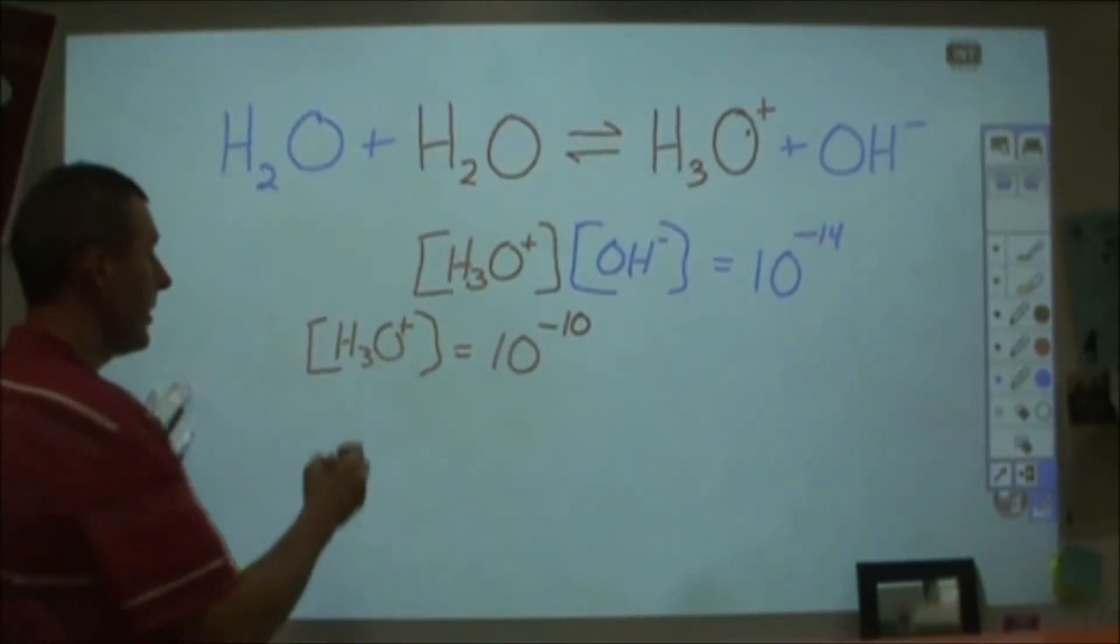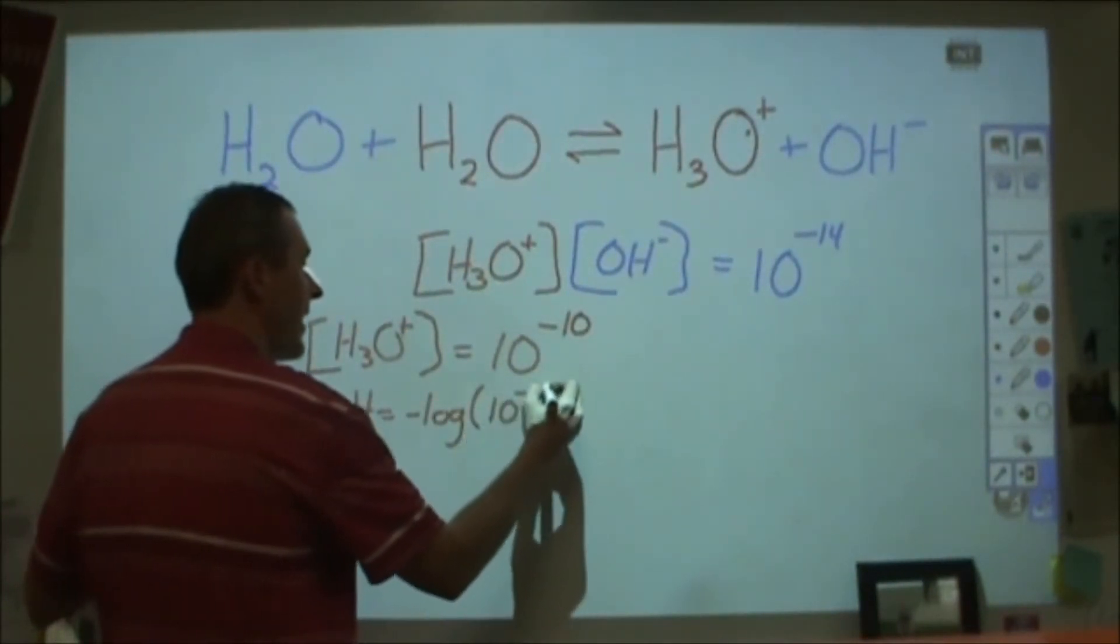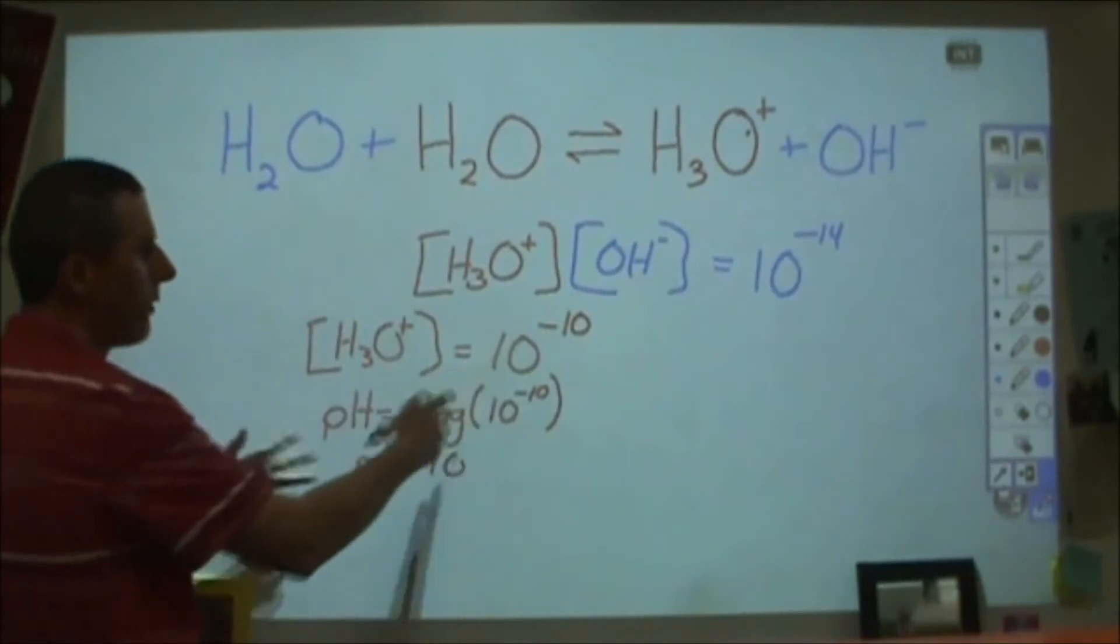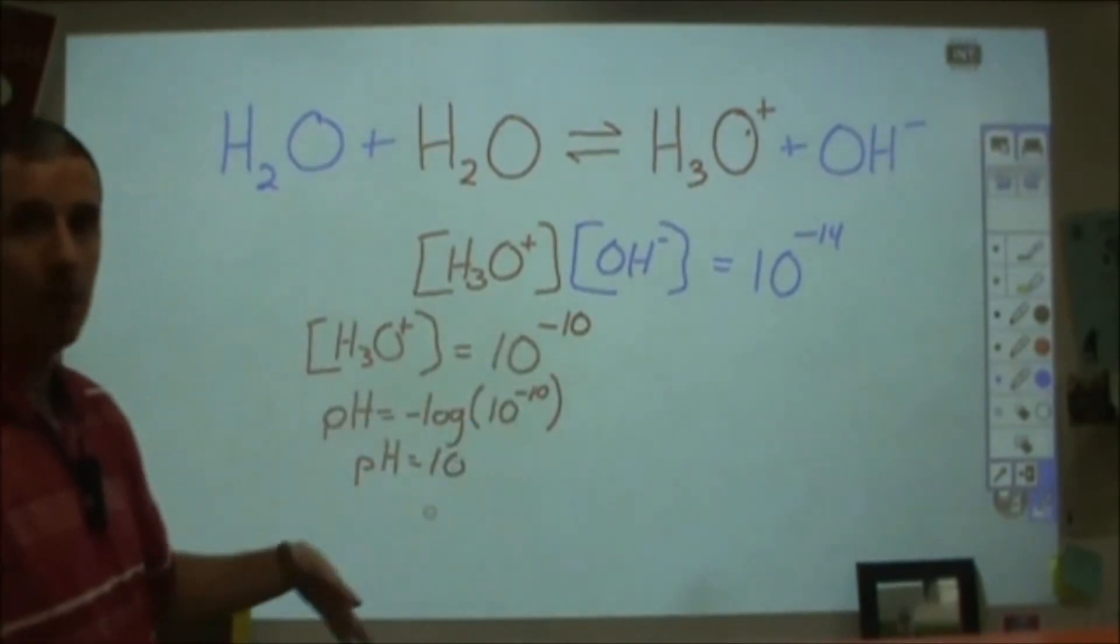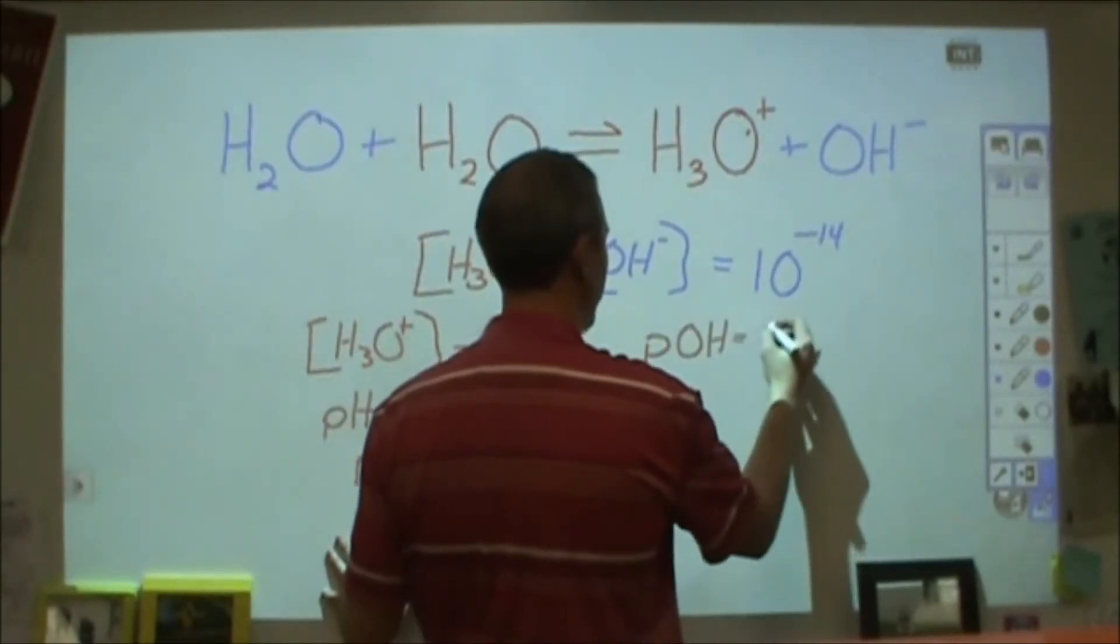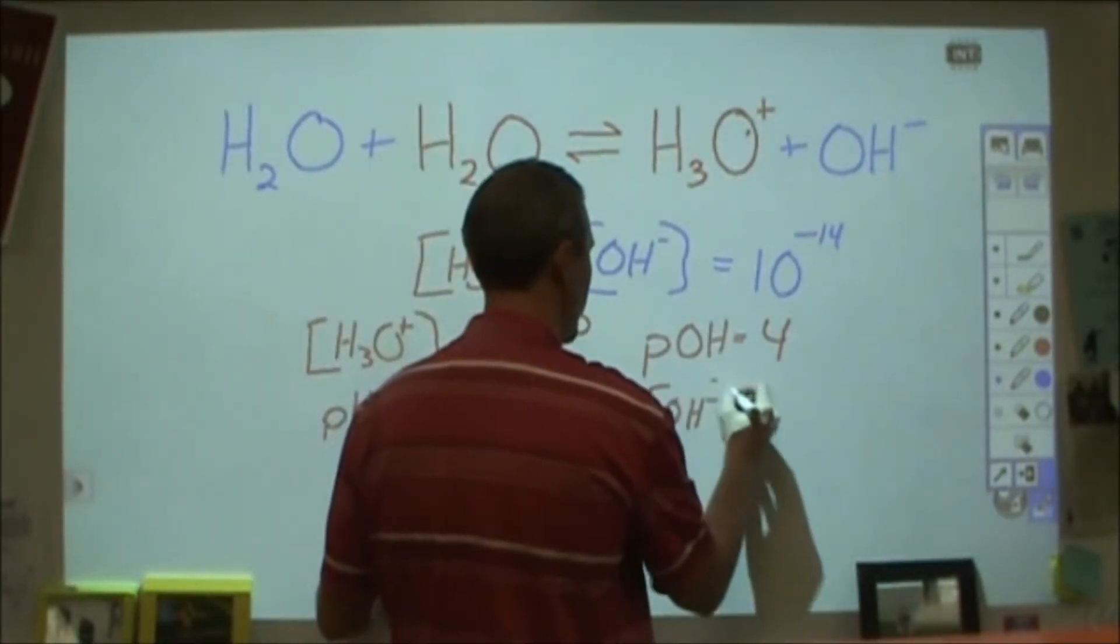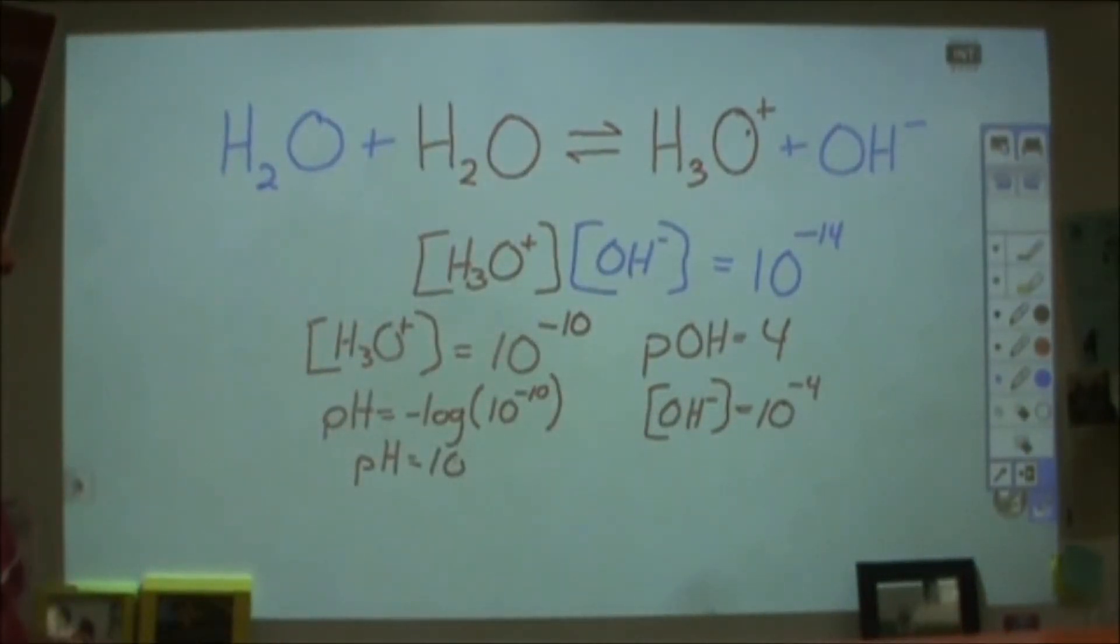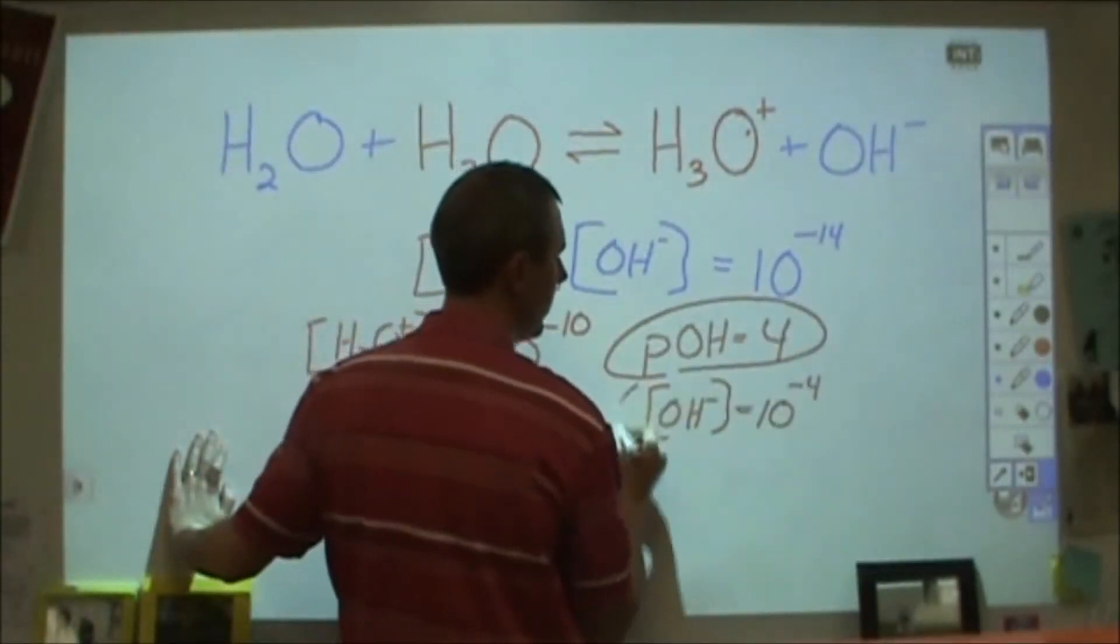To find the pH of that, I would take the negative log of that concentration, and the negative log of 10 to the minus 10 is 10. By having a 1 in front of this, that simplifies down that math—you can just use that exponent. If there's something times 10 to the negative of something, then that changes. pH is 10, that means my pOH would be equivalent to 4 because these will add up to 14. And then if my pOH is 4, then my hydroxide concentration is going to be 10 to the negative pOH, 10 to the minus 4th molar. So I had this that I started with, from that I found this, I found this, and I found this.